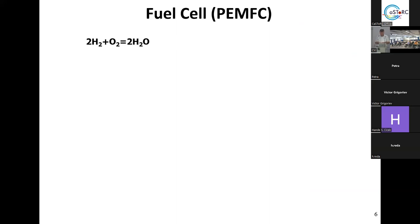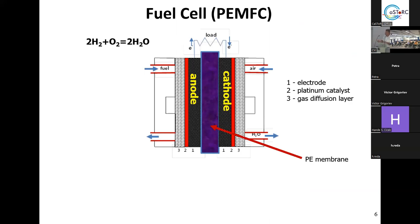A fuel cell is another example: it produces energy from fuels rather than storing it. The reaction is simple but must be controlled carefully. In a proton exchange membrane fuel cell, hydrogen comes to the anode, oxidation takes place, electrons do work, and protons go through the membrane to the cathode where they meet oxygen from air. The only products are electricity and water.